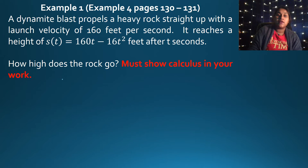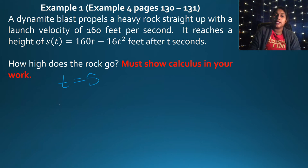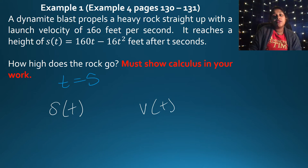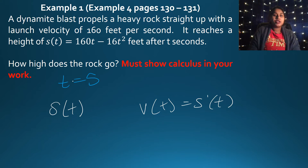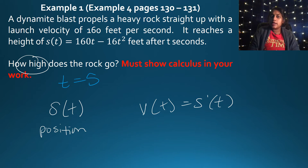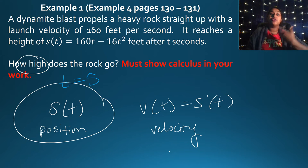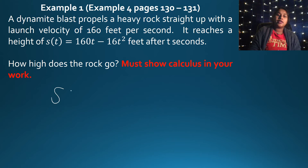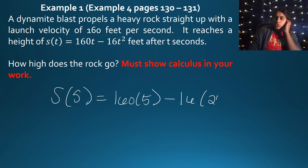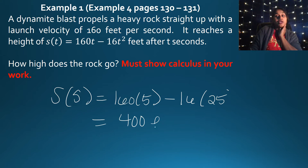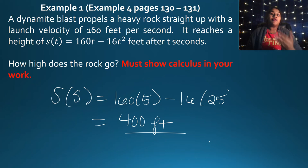Now that we know there's a max at T equals 5, we plug that back in — but into which function? To find the height, we plug T equals 5 into the position function S of T, not velocity. S of 5 gives us 160 times 5 minus 16 times 25, which equals 400 feet. That's the calculus solve.